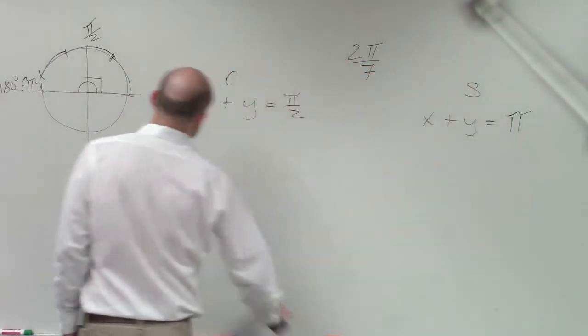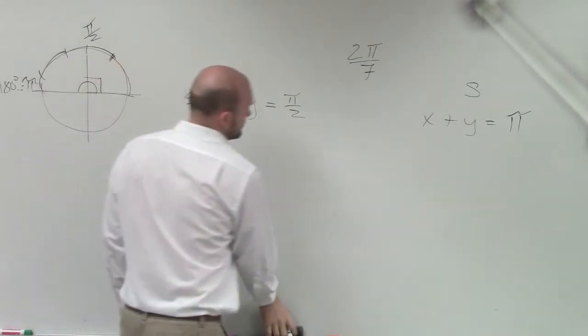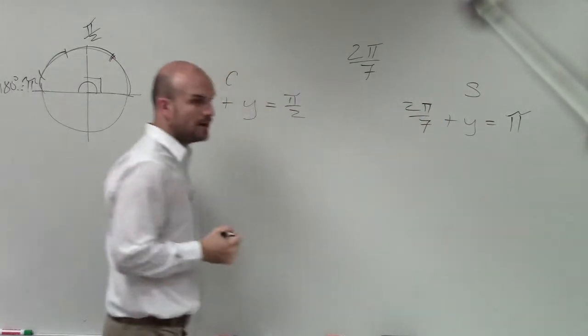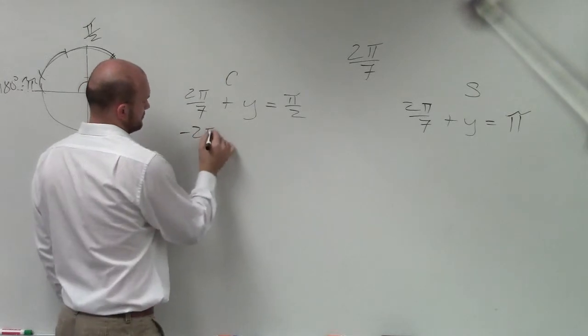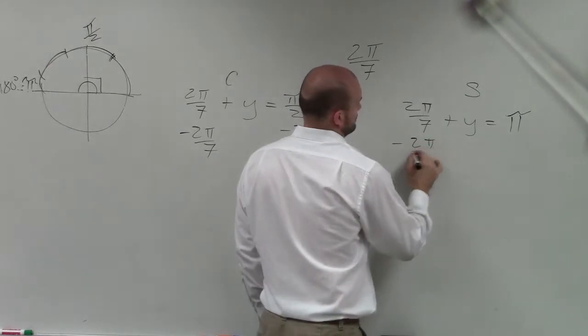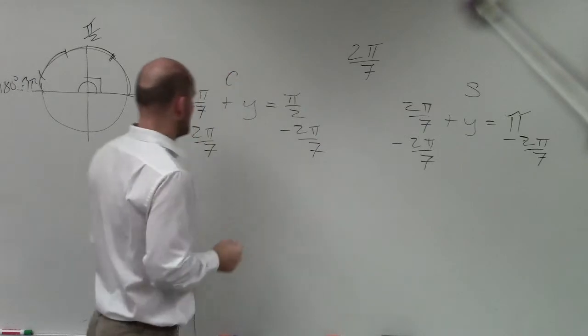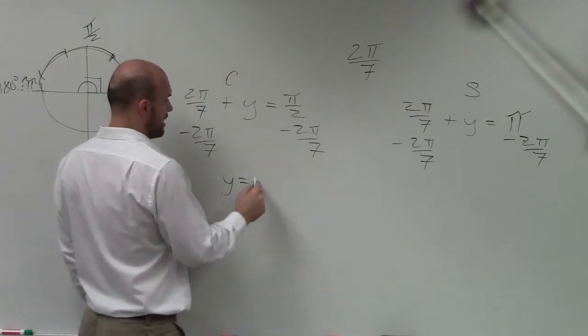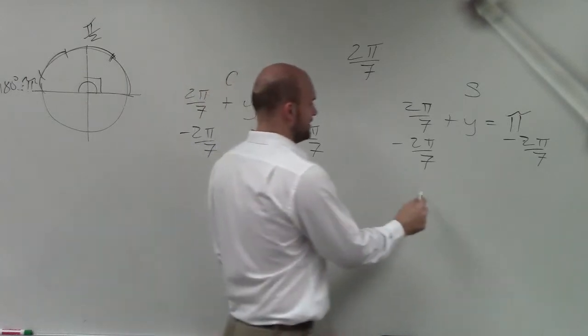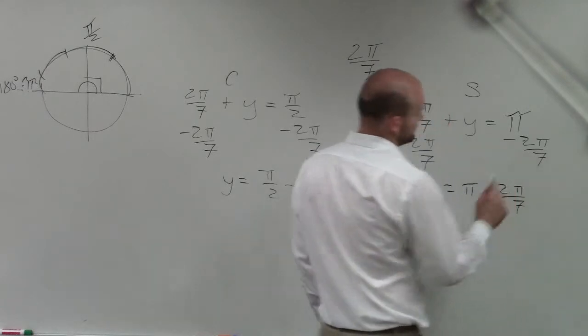So now we're going to do the exact same thing we did before. Just plug in your angle. Now, I subtract. Now this gets a lot of students, because now we have the equation, y equals pi halves minus 2 pi over 7. And we have y equals pi minus 2 pi over 7. All right?